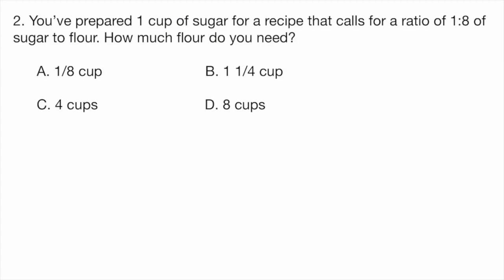So this is a question about ratio. We have a ratio of one to eight of sugar to flour. And it tells us that we have already prepared one cup of sugar. So just a refresher on ratios. A ratio of one to eight means that whenever you have one of this, that means you're going to need eight times as much of that. And so they tell us that this is a ratio of sugar to flour. So one sugar for every eight flour. And so if we have one cup of sugar, that means that we need eight cups of flour to answer our question.